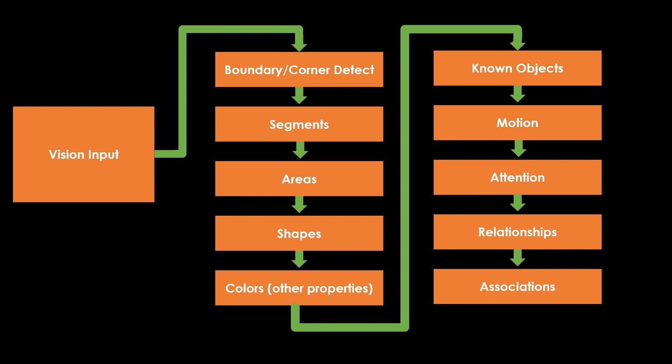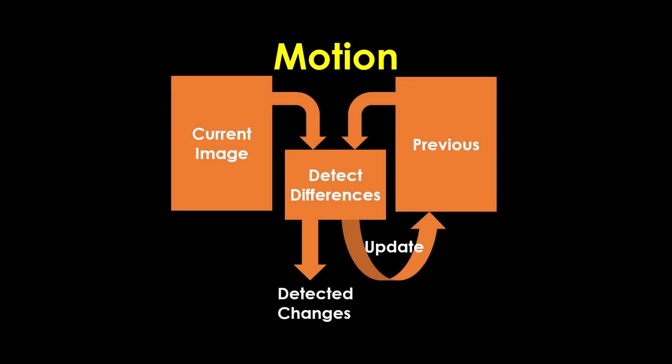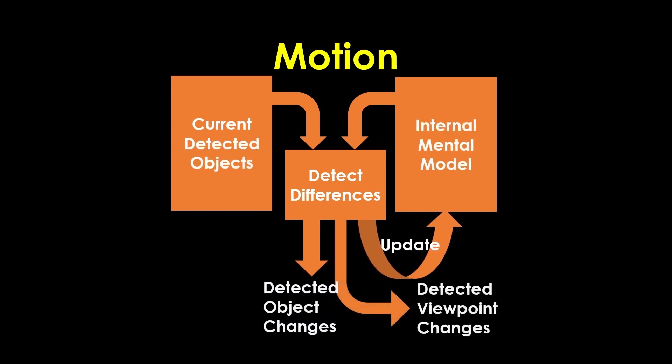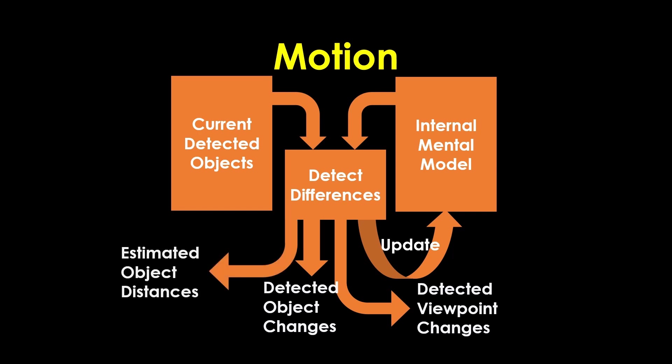Fortunately, other necessary steps in the perception pipeline contribute to this process. The boundary segment and area steps already create a position and size parameter for every detected object in the visual field. As there are many fewer areas than pixels, we can be a lot more exhaustive in computation using objects instead of pixels. The content of the previous frame is stored in the mental model in terms of references to object sizes and locations, all stored in the universal knowledge store. These algorithms can also be used to estimate distances to objects.